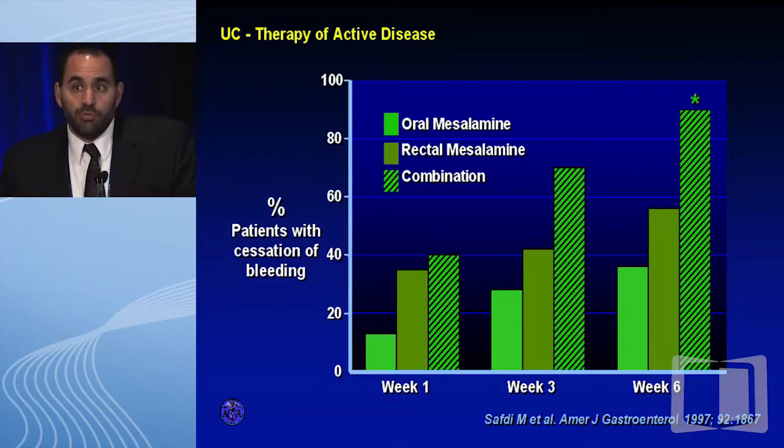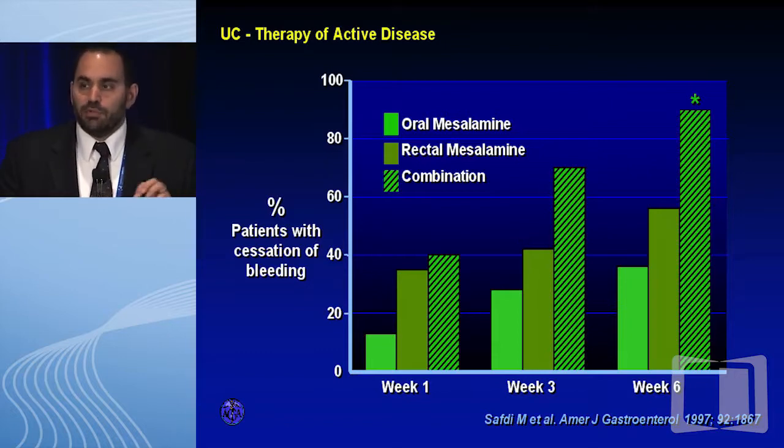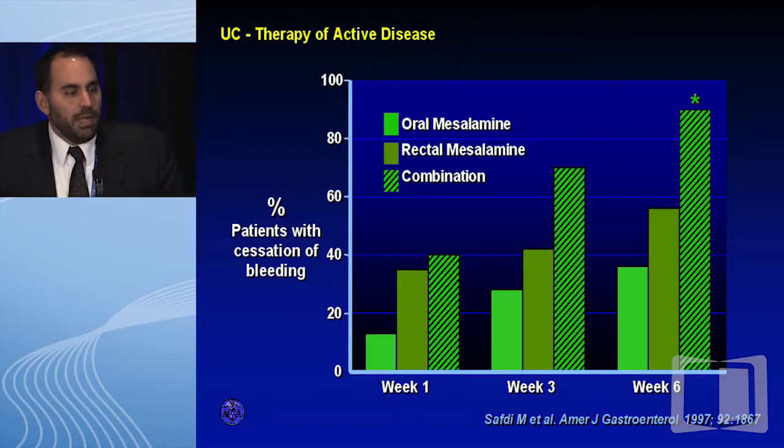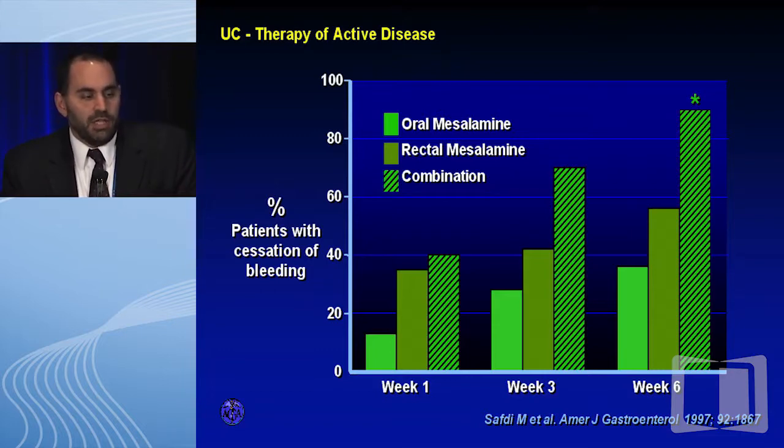Another question is oral versus topical versus both. This older study from 1997 looked at patients with mild to moderate distal UC and compared oral mesalamine, rectal mesalamine, and the combination of oral and rectal mesalamine at weeks one, three, and six. The oral dose was 2.4 grams a day. Clearly the combination therapy with oral and topical 5-ASA outperforms topical alone, which outperforms oral therapy alone. So for your distal patients, if they're willing to use topical therapy — whether enema or Canasa suppositories — they do better when combined with an oral 5-ASA.